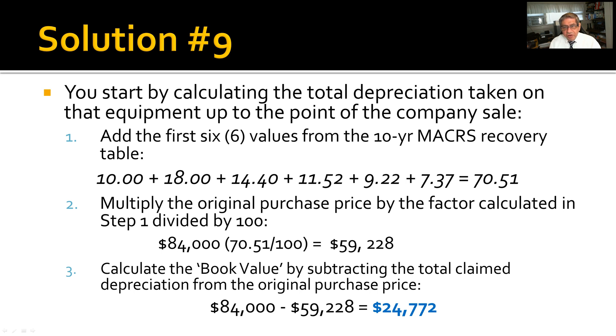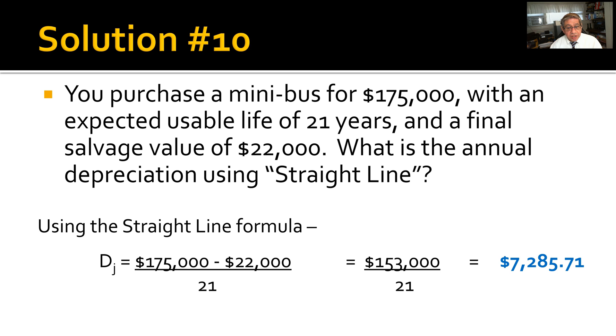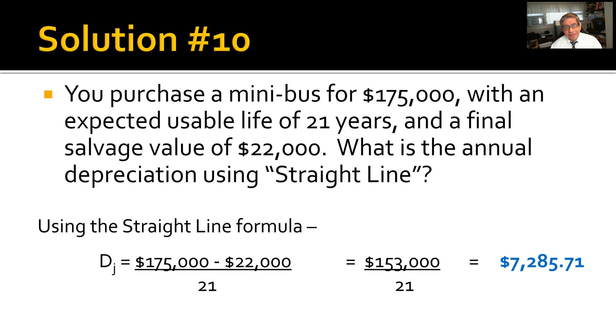Solution number 10 is the purchase of the minibus—$175,000, 21 years. Using straight-line formula, depreciation Dⱼ = ($175,000 - $22,000) / 21. Subtract the salvage value: that becomes $153,000 / 21, or $7,285.71 that you can depreciate on this minibus each year.